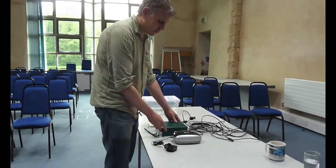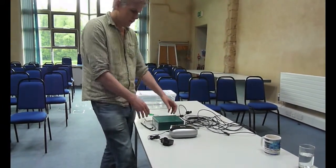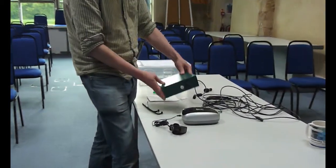This is the kit you get when you take part in the Norfolk Bat Survey. It includes the actual detector itself, which is there.